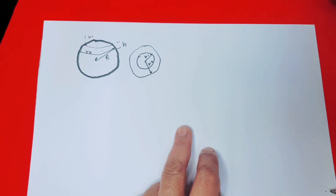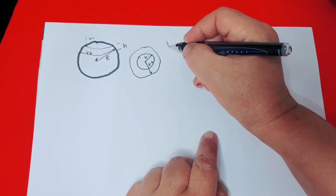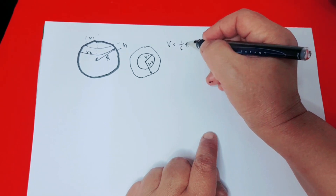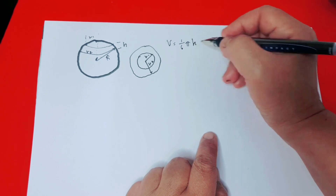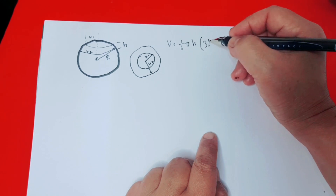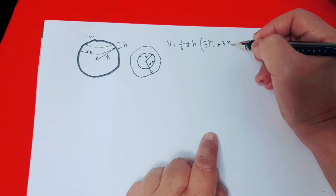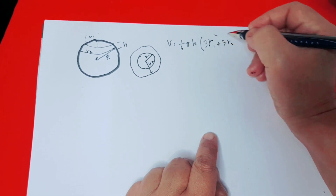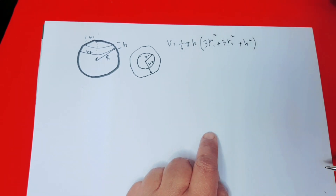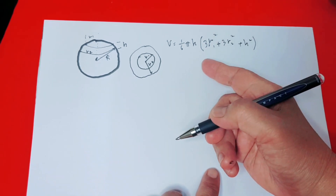This can be solved using the formula of a spherical segment, which is: Volume equals (π/6) times the height, times the quantity 3r1 squared plus 3r2 squared plus h squared. This is the volume formula of the spherical segment we will use to solve the volume.